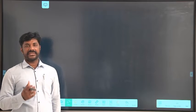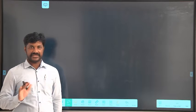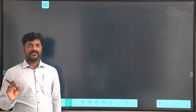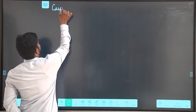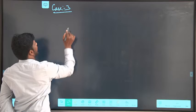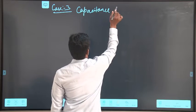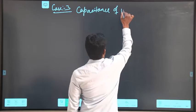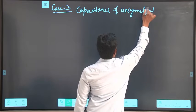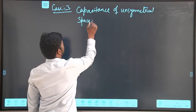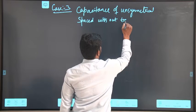In today's class we are going to see the calculation of the capacitance for the same three-phase three-wire system of an untransposed line. So today is our Case 3: calculation of capacitance of unsymmetrically spaced conductors without transposition.